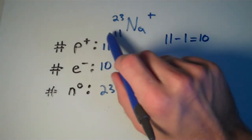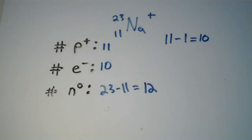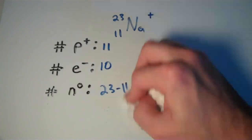So, this sodium ion up here has 11 protons, 10 electrons, and 12 neutrons. So, let's go over one more.